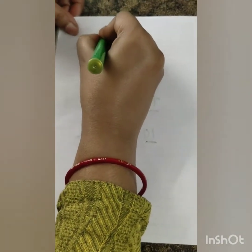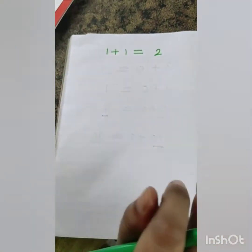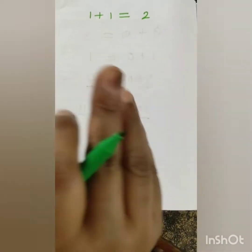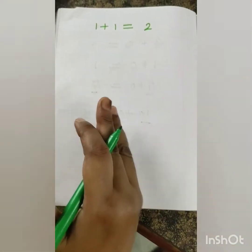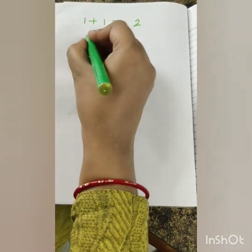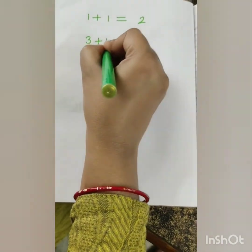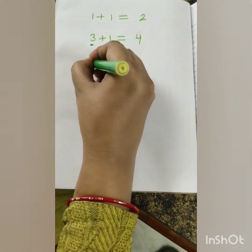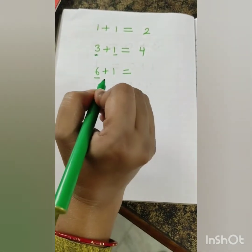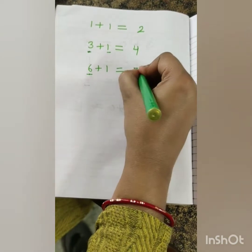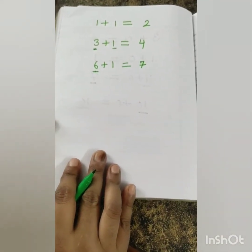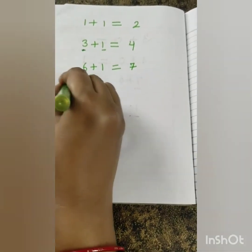One more thing I will show you. If I add one plus one, the answer is two. If I add number one to any number, I will get the number just after that number. Three plus one — the number which comes just after three — that is four. Six plus one — the number which comes just after six — that is seven. You will also do the checkpoint of the maths book on page number 28.